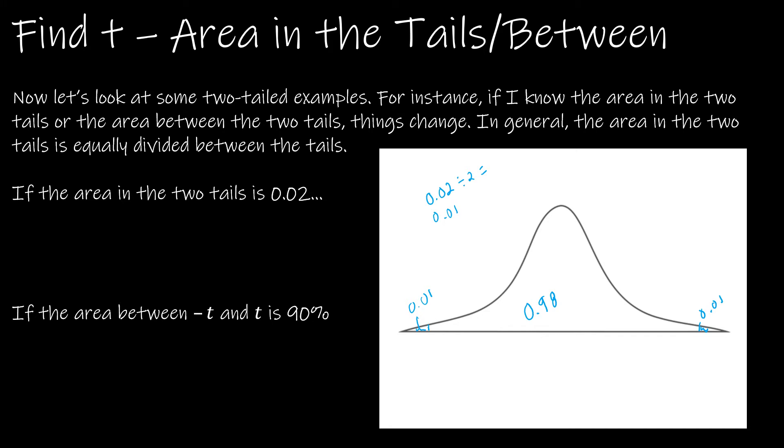In Excel, how would I find this t-value? To find this t-value, I would take t dot inverse of the area to the left of this. So if there's 0.01, 1% to the right, then there's 99% to the left, and then whatever my degrees of freedom are.